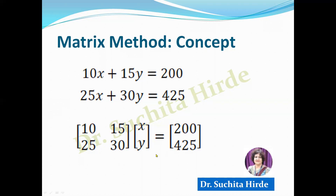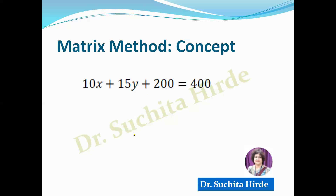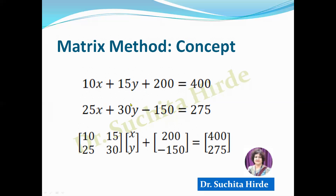Now let us have another example where there is one more term on the left-hand side. We have the equation 10x plus 15y plus 200 equals 400, and the second equation 25x plus 30y minus 150 equals 275. In matrix form, x and y are variables, and we multiply the coefficient matrix by the variable matrix. We read it as: 10x plus 15y plus 200 equals 400, and 25x plus 30y minus 150 equals 275. This is how we write simultaneous equations in matrix form.